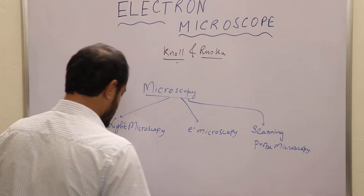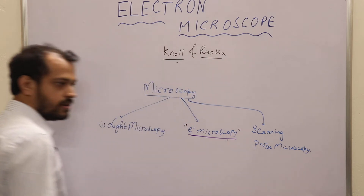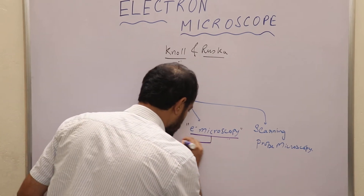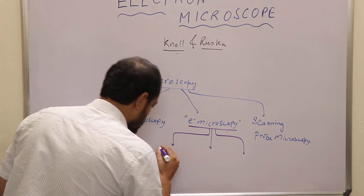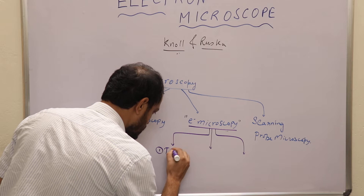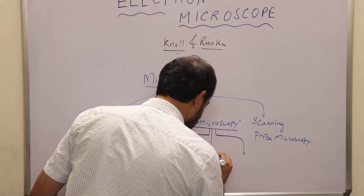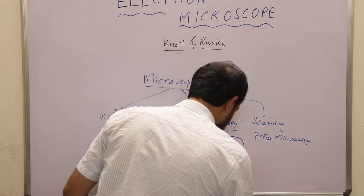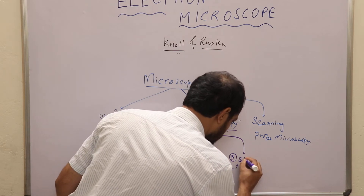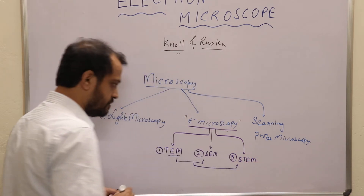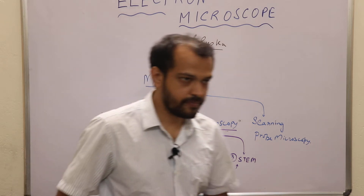Right now today we will be discussing electron microscopy. There are basically three main types of electron microscopes: number one, transmission electron microscope or TEM; number two, scanning electron microscope or SEM; number three is a combination of TEM and SEM called STEM — that is, scanning transmission electron microscope.